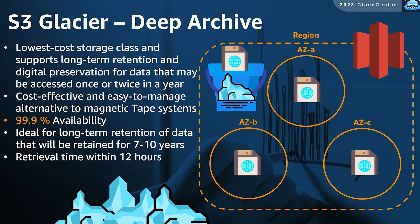The last class to mention is Glacier Deep Archive. This is the lowest-cost storage class. Imagine you need to keep your backups for the last 10 years for the sake of compliance — you would like not to spend too much money on that and you do not expect to retrieve them anytime soon. You can use Glacier Deep Archive and maximize your savings, but when needed, expect retrieval time to be within 12 hours.